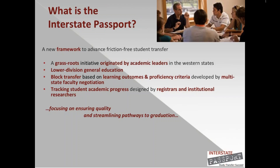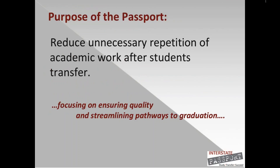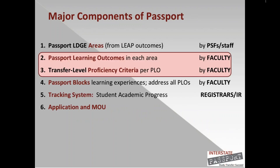The purpose of the passport is to reduce unnecessary repetition of academic work in lower division general education after students transfer. There are six major components of the passport, and our focus today will be on two that are highlighted: the passport learning outcomes, which we sometimes call PLOs, and the transfer level proficiency criteria, which we sometimes refer to as PCs.